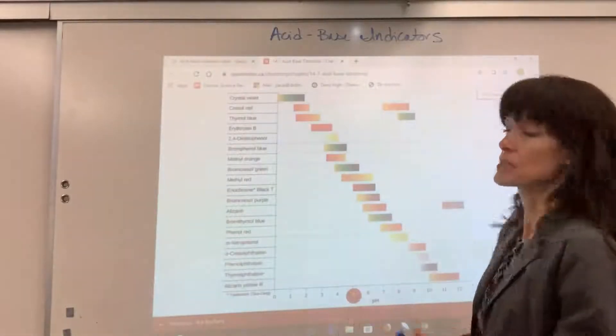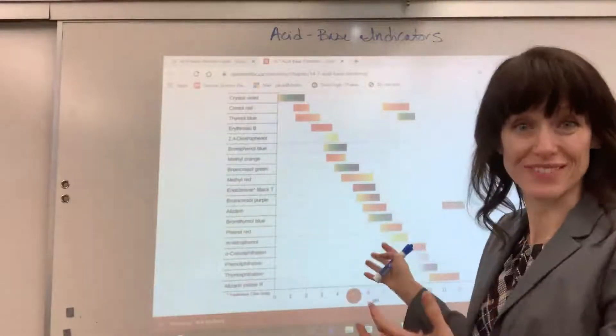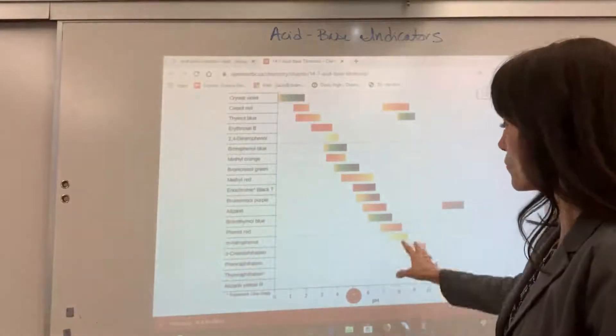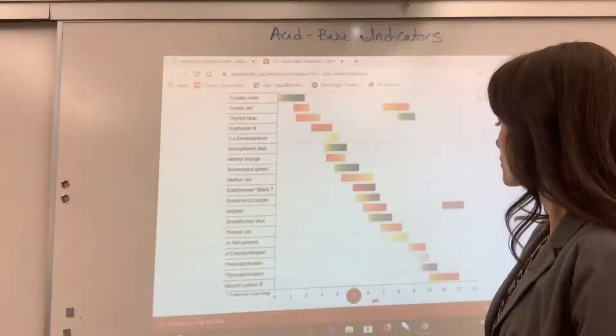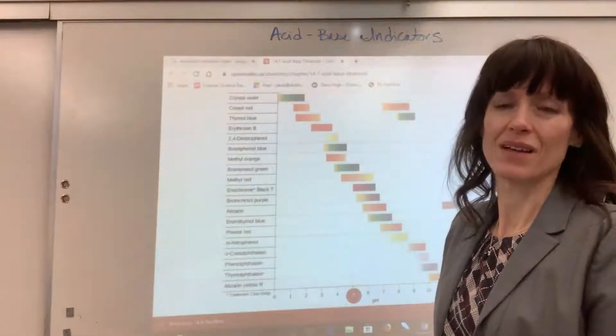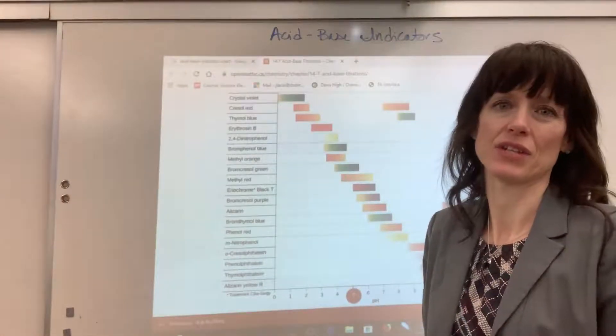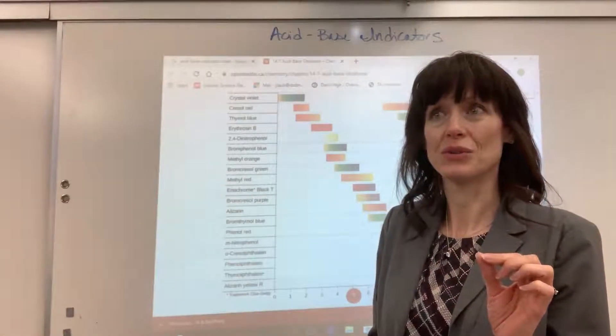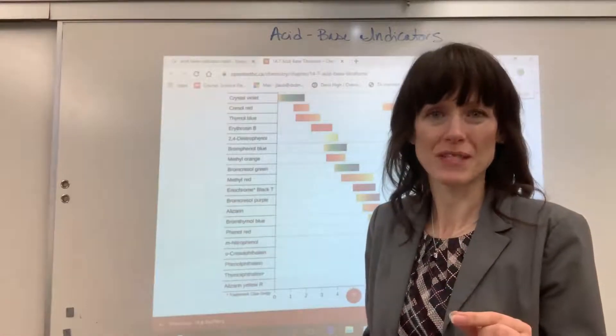So let's talk just a little about indicators. That shows you how to read this indicator table, and thank you to Open Textbook BC for the use of this. Here's the key. You're going to do this acid-base titration, and you'll have an idea where the pH is going to be, what the pH will be at the equivalence point.